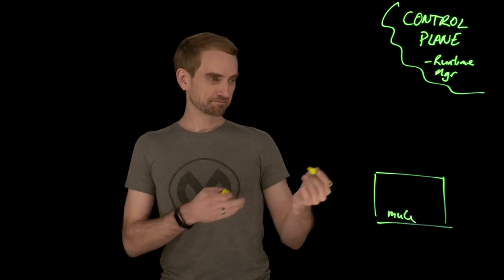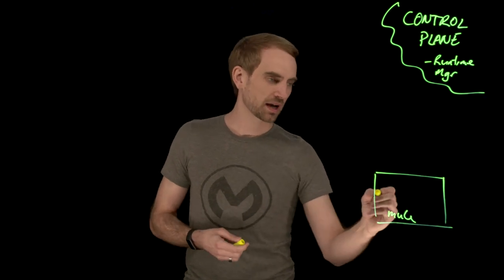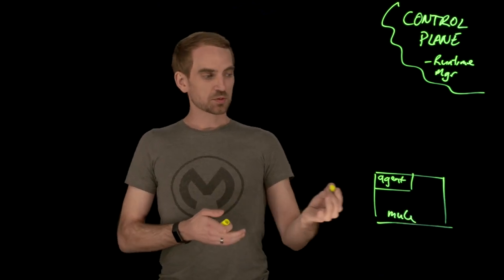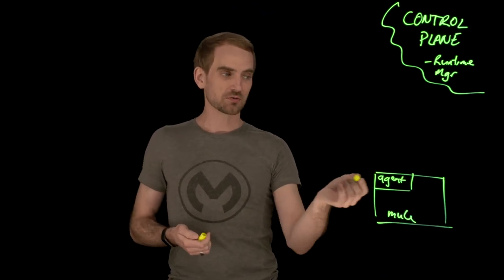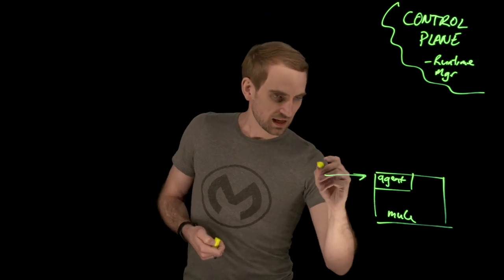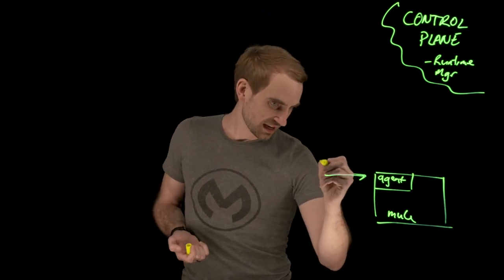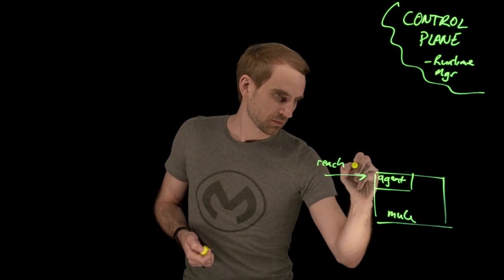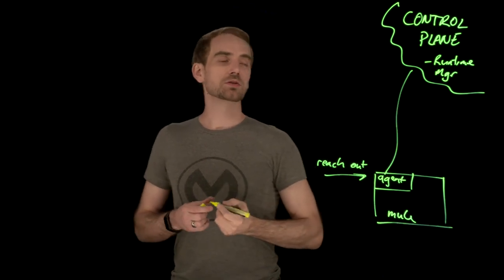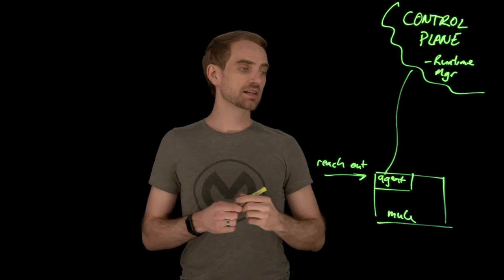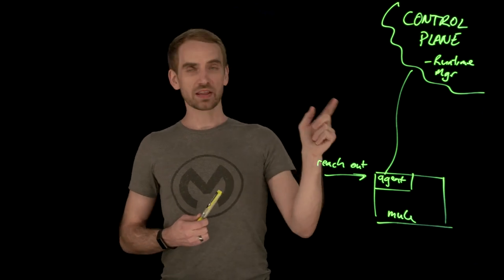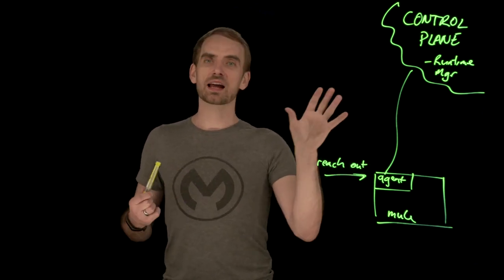Now part of that command, or where that command lives, is a part of this called the agent. So that comes bundled with Mule but it has its own version. And the command that you need to essentially say reach out, it then talks up to the control plane and says hey I exist. Now that part registers it with the control plane and it will then know that there is a server called whatever the name is.